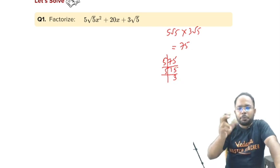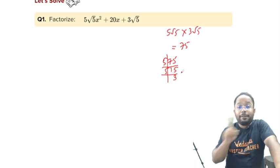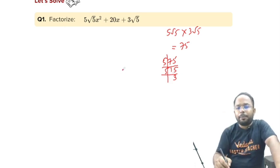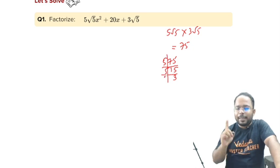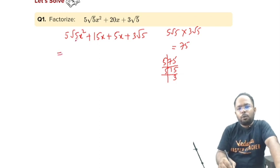We can take multiple options. Let's see in which case we can get the 20. If I take 5 into 5, 25 and 3, we can get the product as 75, but we will not get the sum as 20. If I take 5, 3 is 15 and 5. Yes. 15, 5 is 75. 15 plus 5 is 20. What we will do is, 5√5x² we will write here 15x plus 5x plus 3√5.